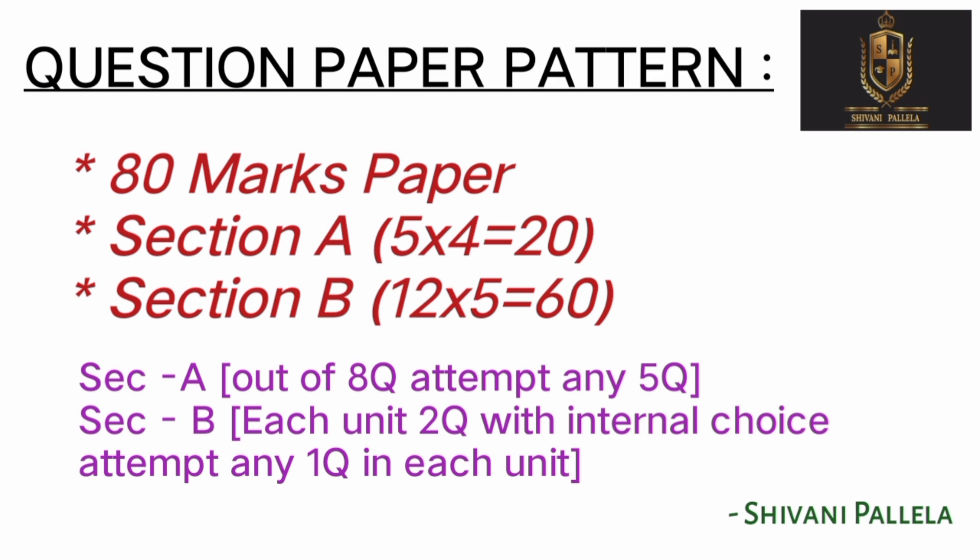In Section B, there are five units with internal choice. Five questions, each carrying 12 marks — five into twelve equals 60 marks for Section B.